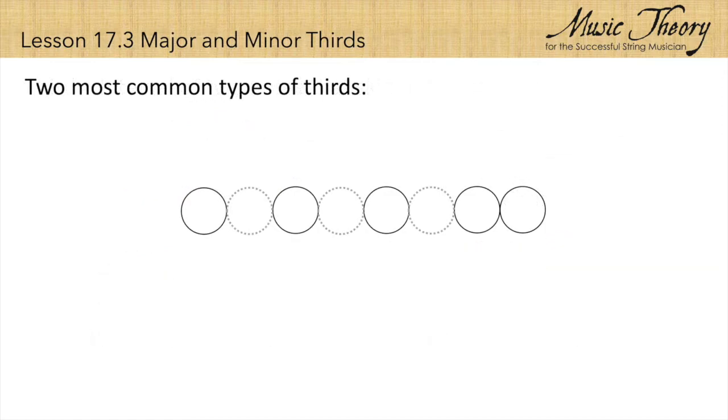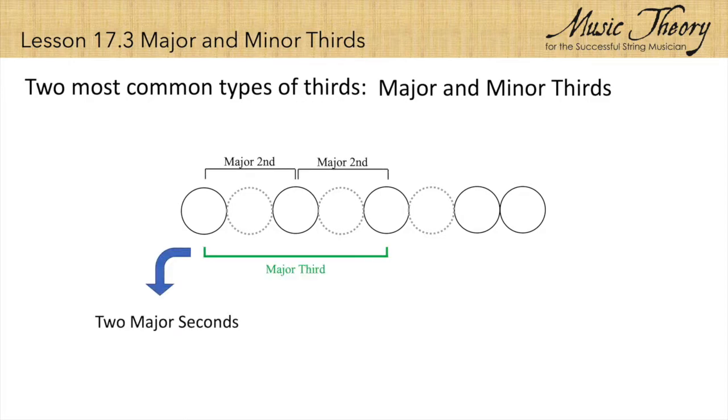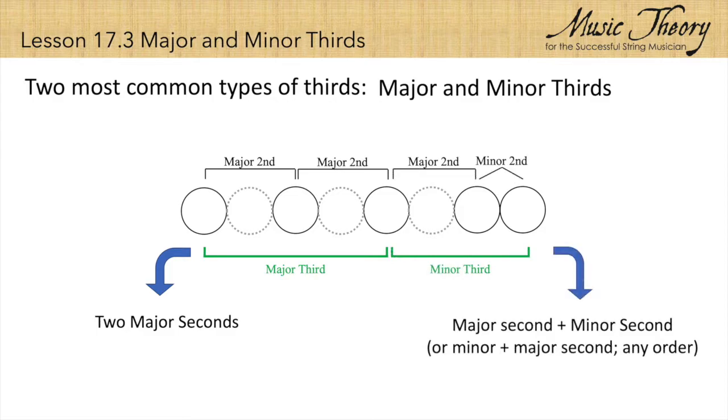Like seconds, the two most common types of thirds are major and minor thirds. A major third is made up of two major seconds. A minor third is made up of a major second plus a minor second, or it could be a minor plus a major second. It doesn't matter what order they are in.